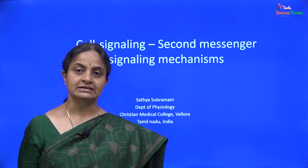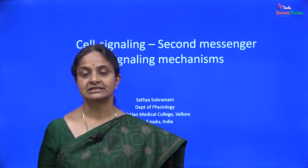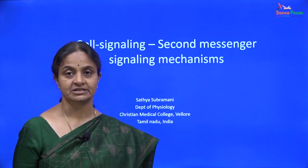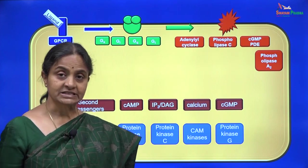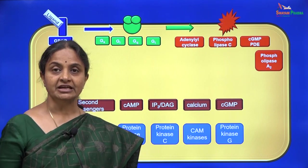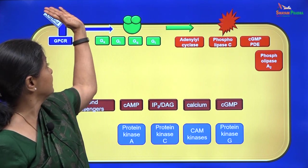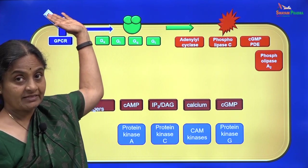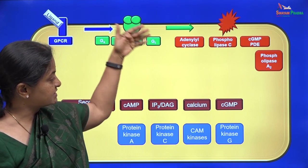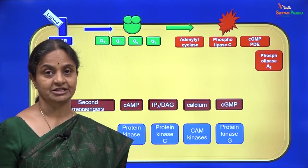The module in progress is cell signaling mechanisms and we are focusing on G protein coupled signaling mechanisms, which are also referred to as second messenger signaling mechanisms. The term second messenger is specifically used for these substances. The implication is that the ligand itself is the first messenger, and the ligand stops at the membrane, binding to a membrane receptor, and it produces its actions on the cell by elaborating one of these molecules which act as its second messenger.